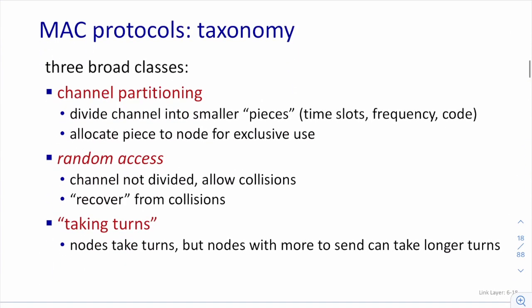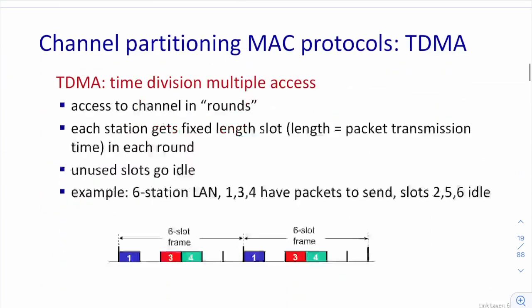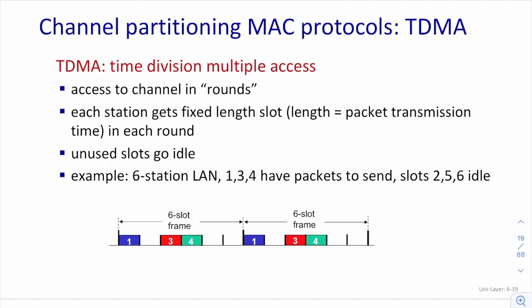In this class we will introduce three different types of MAC protocol: channel partitioning, random access, and taking turns. In Wi-Fi and Ethernet, random access is used to access the channel. Since random access is more complex, we introduce channel partitioning and taking turns first, and then discuss random access.